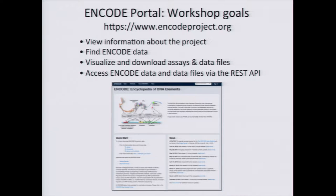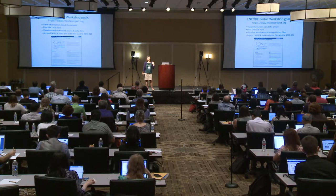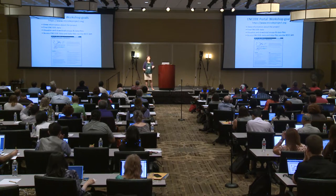The goals of the workshop are really to allow you to find the information you want on the ENCODE portal — information about the project itself and the ENCODE data you're interested in. I'll show you how to take the data files you find, how to download data from the portal, and how we've instituted a one-click way to visualize data at the UCSC Genome Browser. All the information on the website is also available programmatically via the REST API, and the exercises include examples and links. We can help you answer questions as you work through those exercises as well.